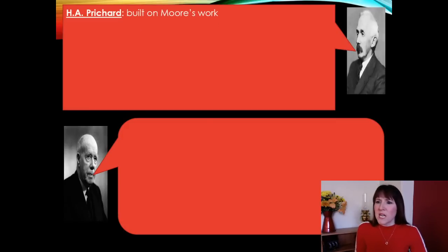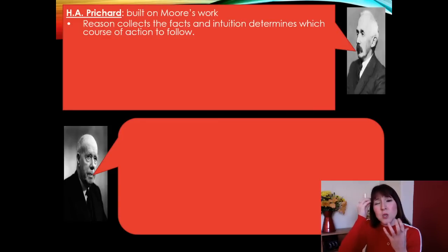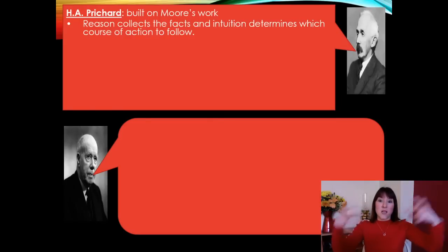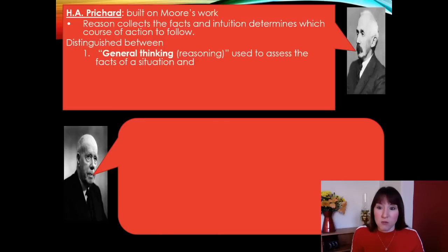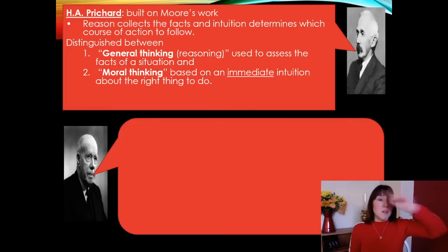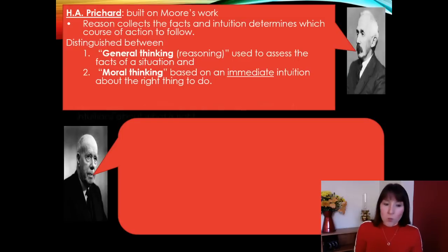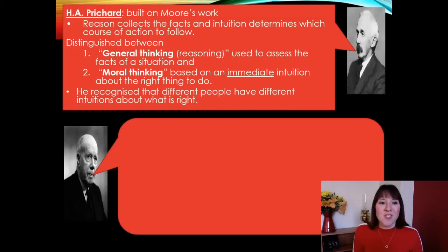H.A. Pritchard built on Moore's work. He said that reason collects the facts and intuition determines which course of action to follow. He distinguished between general thinking — reasoning used to assess the facts in a situation — and moral thinking, which is the immediate intuition of what you should do. For example, you see somebody collapse in the street. Your reasoning: they look like they've had a heart attack, something is wrong. Your moral thinking — that immediate intuition — is: I must go over and help, I must call 999. He recognized that different people have different intuitions about what is right and wrong.